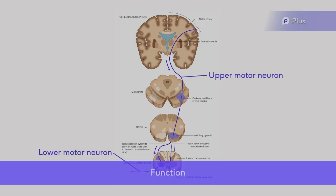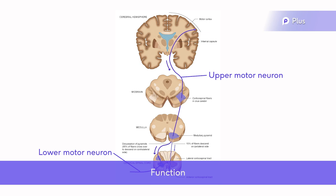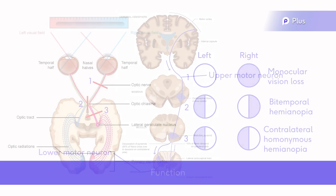Upper motor neurons originate in the cortex or in the brainstem, providing signals to initiate or regulate movement. They synapse on the lower motor neurons, which then transmit signals to the target gland or muscle.